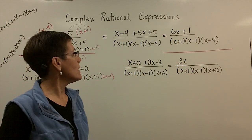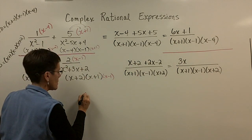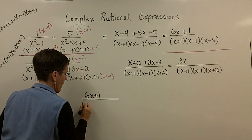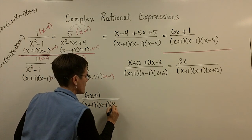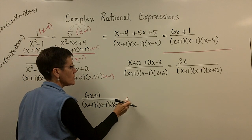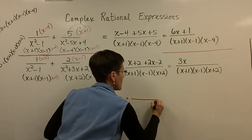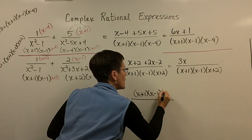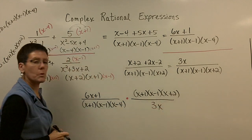And when you divide, you multiply by the reciprocal. So let's copy this one down. So we have the 6x plus 1 over its common denominator of x plus 1, x minus 1, and x minus 4. Again, I'm going to divide. So I'm going to multiply by the reciprocal. So this right here, I'm going to flip. So I'm going to put the x plus 1, the x minus 1, and the x plus 2 in the numerator, and the 3x will go in the denominator.